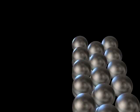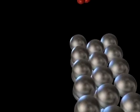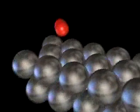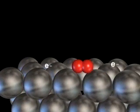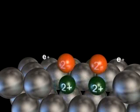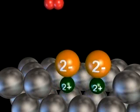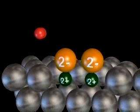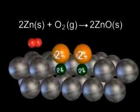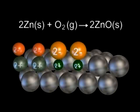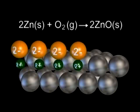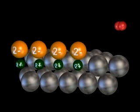When zinc metal is exposed to oxygen at high temperature, it reacts to form zinc oxide. Electrons are transferred from zinc to oxygen, creating oxide and zinc ions. We say that zinc has been oxidized. The oxidation of zinc by molecular oxygen is an example of an oxidation-reduction reaction.